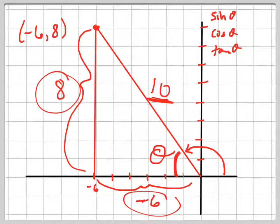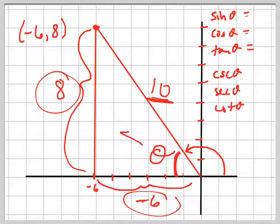And then the other ones are the reciprocals of those: cosecant, secant, cotangent. So the sine of theta is the opposite over the hypotenuse, 8 over 10, which reduces to 4 over 5.